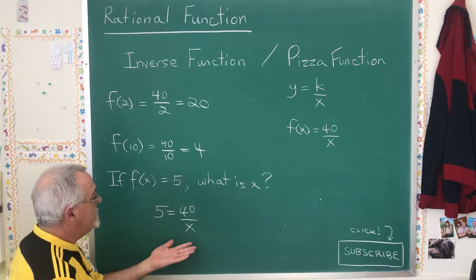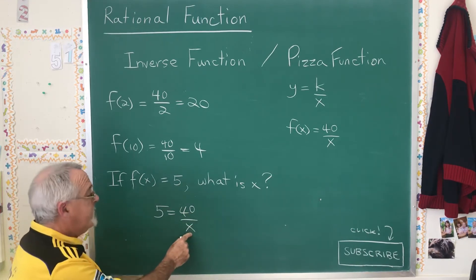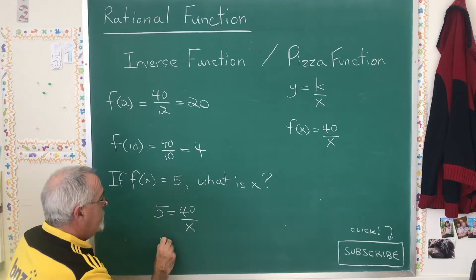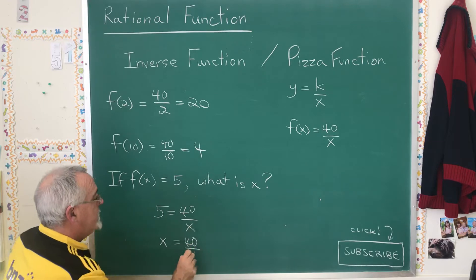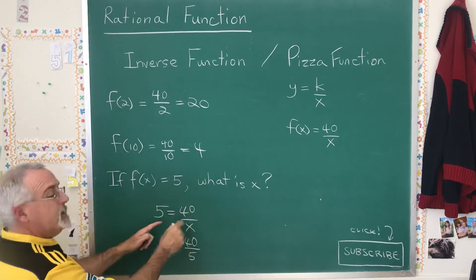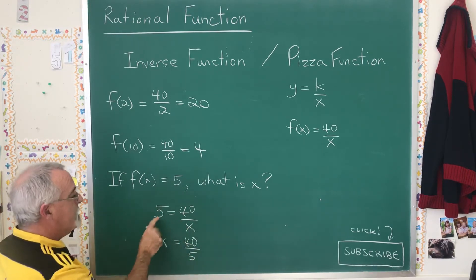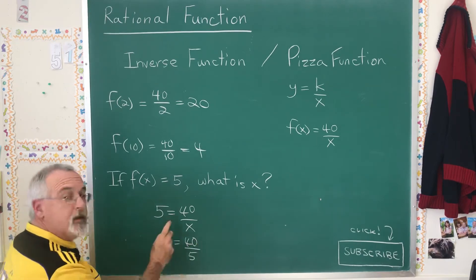And then what do I do? When I have my x in the denominator, I do the trade. I replace the 5 with the x, and I replace the x with the 5. I trade places between the x in the denominator and what's on the other side. And now I'm able to simplify.